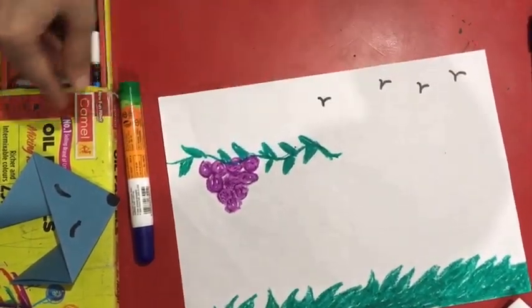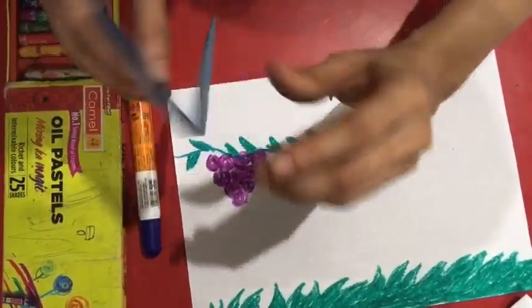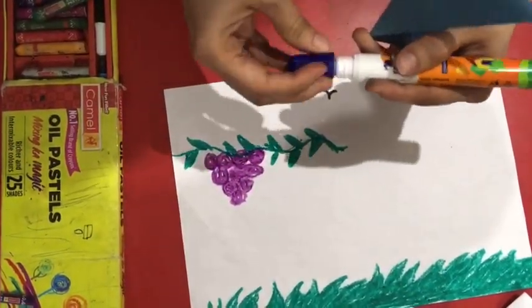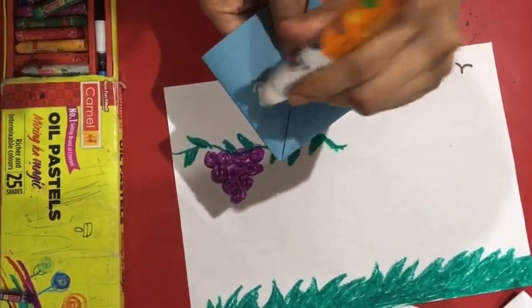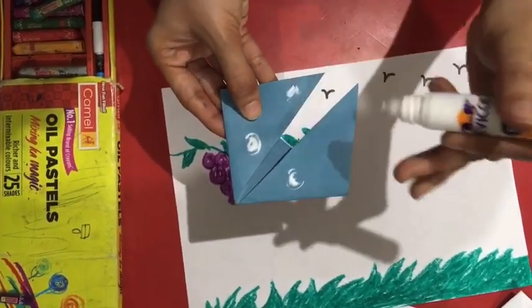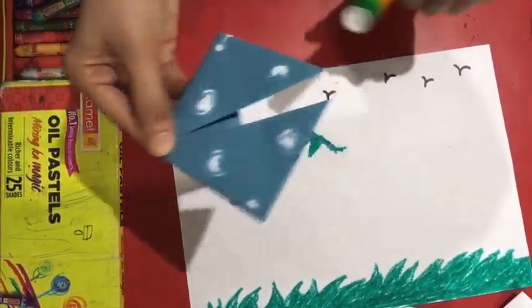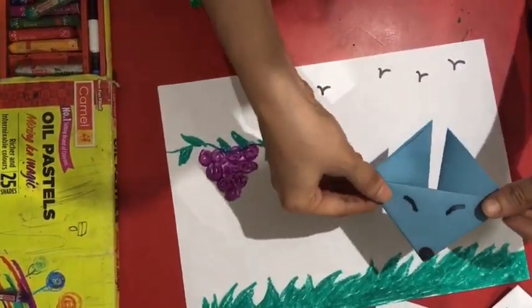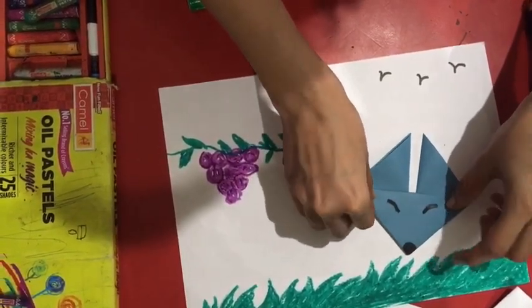Now take your origami fox face. Put glue behind. Don't put too much glue. Stick it on the paper. You can stick wherever you want.